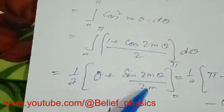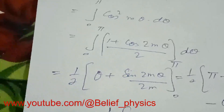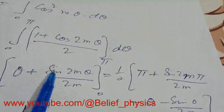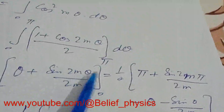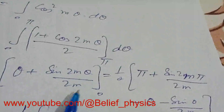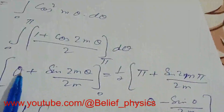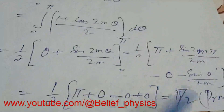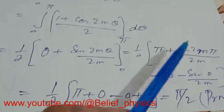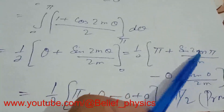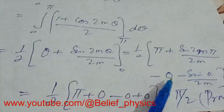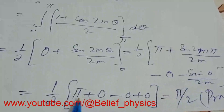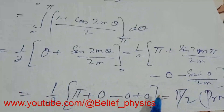Using the identity cos squared(m theta) equals (1 plus cos(2m theta)) over 2, we integrate to get theta over 2 plus sin(2m theta) over (4m), evaluated from zero to pi. Substituting the upper limit pi: sin(2m pi) is zero since it is a multiple of pi. Substituting zero: theta and sine terms are both zero. So the result is pi over 2.